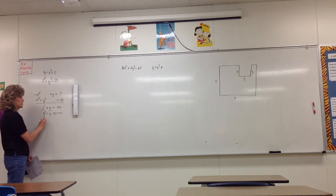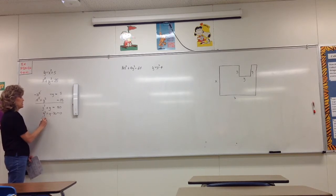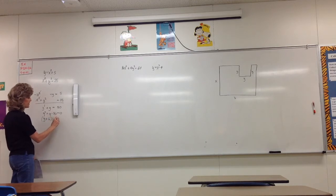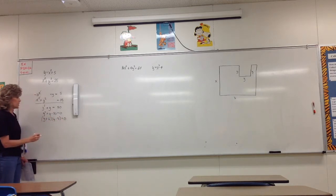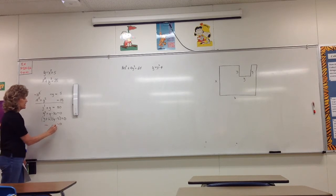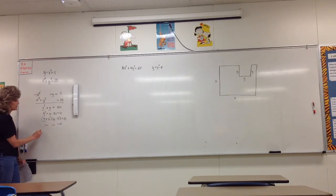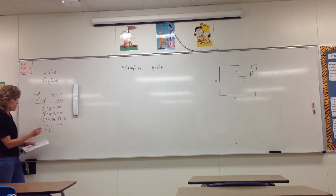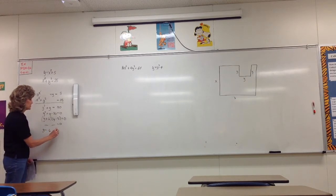We want to factor this. We need two numbers that multiply to negative 30 and add to positive 1 — that's positive 6 and negative 5. So it factors as (y plus 6)(y minus 5) equals zero. Either y plus 6 equals zero, giving y equals negative 6, or y minus 5 equals zero, giving y equals 5.